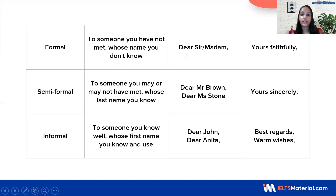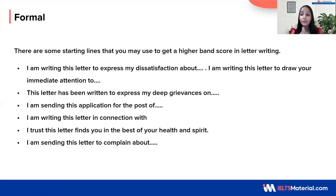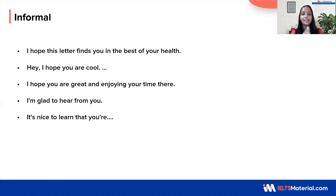For a formal letter, you will begin with Dear Sir or Madam, and your sign off would be Yours Faithfully. For semi-formal, as you know them by the first or last name, you can include either of them and write Yours Sincerely to sign off. For informal, you can directly write the first name of your friend and you can write Best Regards or Warm Wishes to close the letter. There are some useful opening lines that you can use to get a better band score in letter writing. For formal letters and informal letters, you can use the respective lines shown on screen.